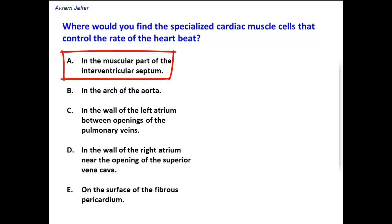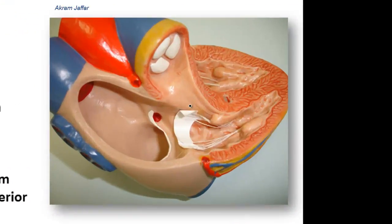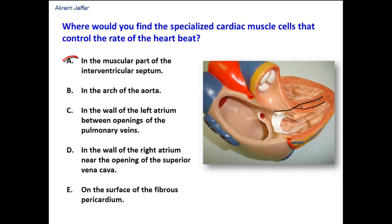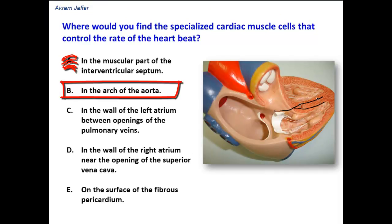Option A: in the muscular part of the interventricular septum. In fact, the interventricular septum contains, in its membranous part, the AV bundle, and in its muscular part, the bundle branches — the right bundle branch and the left bundle branch. So it does not contain the SA node.